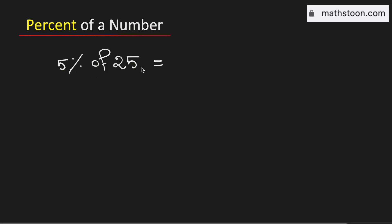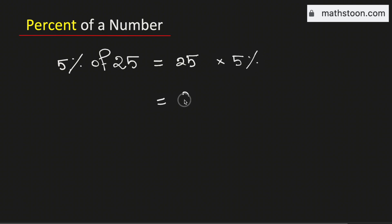To find 5 percent of 25, we will multiply the number 25 by 5 percent. In the next step, we will write 25 as 25 over 1, and this 5 percent can be written as 5 over 100.